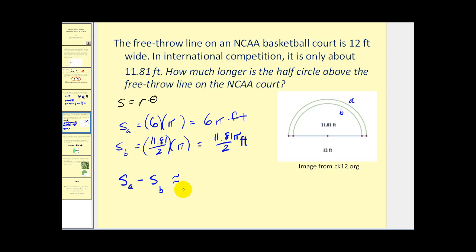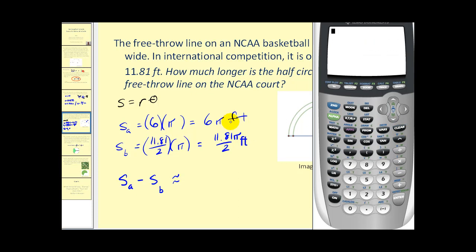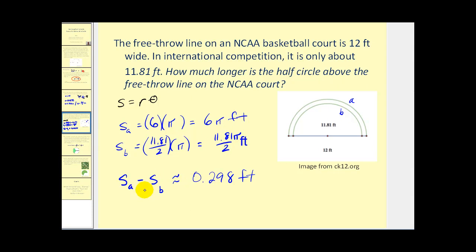Let's go to our calculator. It does not say where to round, but we are going to round on this problem. Our first arc length was 6π minus the second arc length. Here's our difference in arc length. The difference in arc length is approximately 0.298 feet.